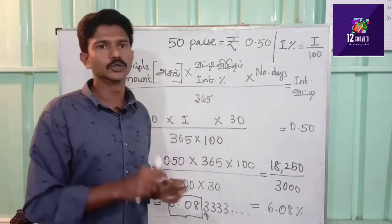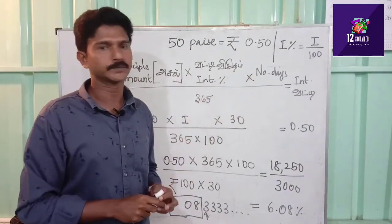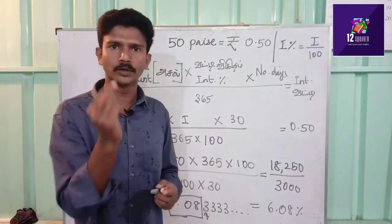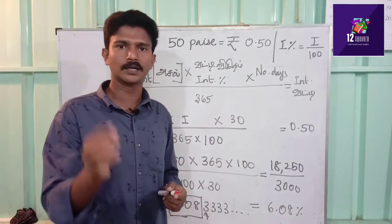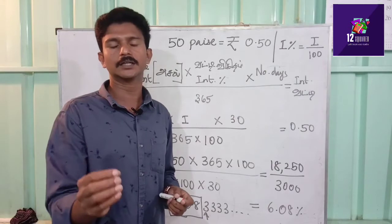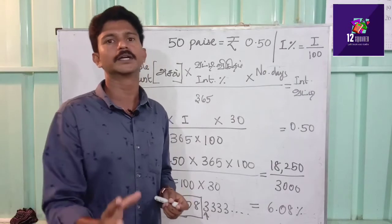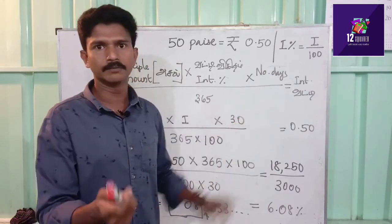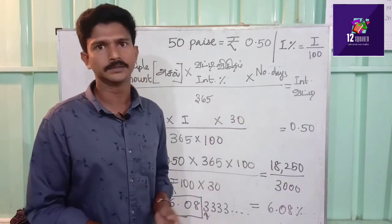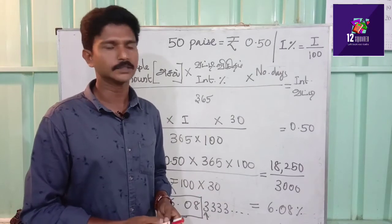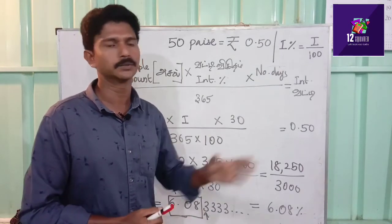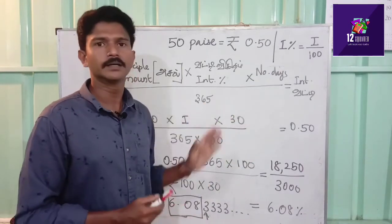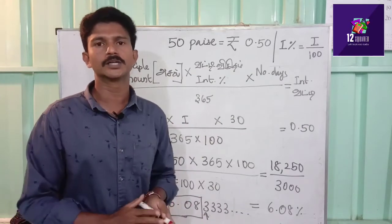How do we do the number of days? Divide by 30. We calculate the number of days. It is divided by 365. If you take the number of days, you calculate accordingly.